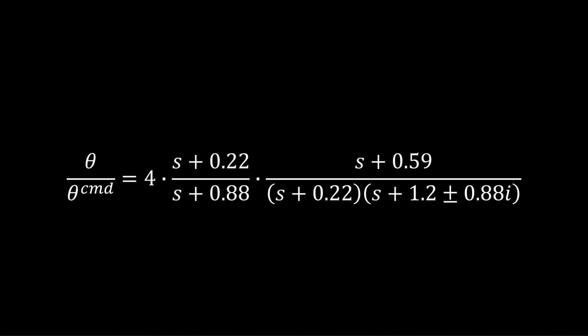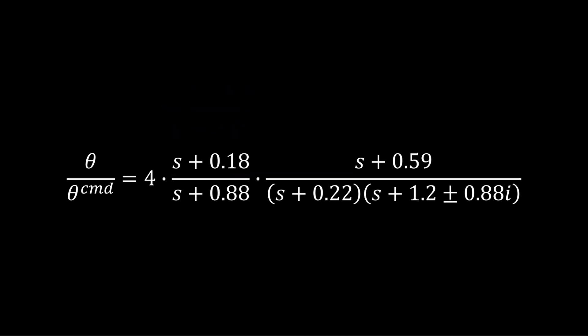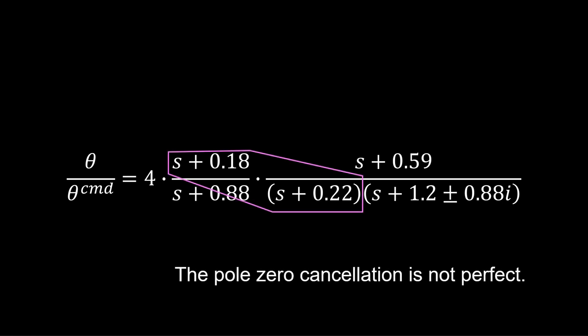But there is always model uncertainty. Now consider that the model says the slow pole is at minus 0.18. But due to model uncertainty, it's actually minus 0.22. Then in the lead compensator, we would set the zero to minus 0.18 based on the information we have. So the effect is that the pole zero cancellation is not perfect.